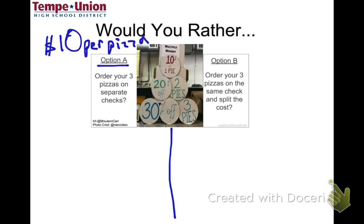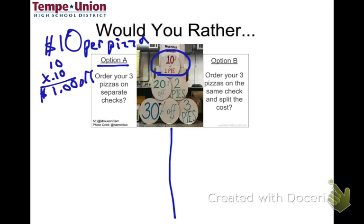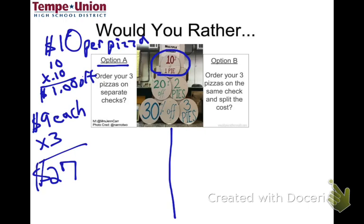Option A: separate checks get you a 10% discount. That's 10% of $10, which is $1 off each pizza. So each pizza costs $9. With three people each getting a pizza, the total comes to $27.